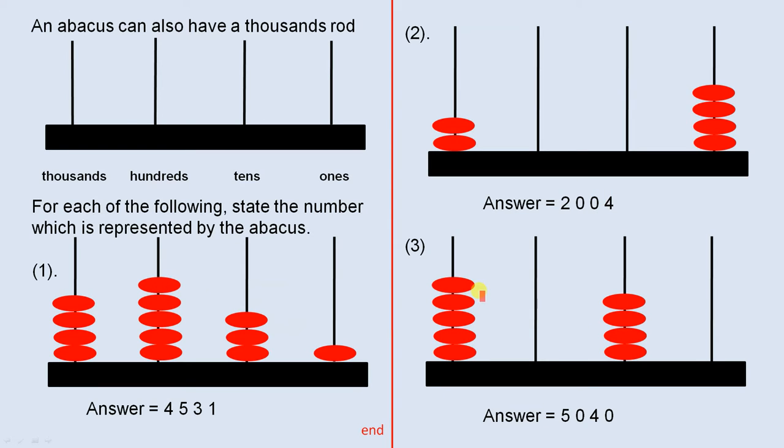And finally, five beads in the thousands column, no beads in the hundreds, four in the tens, and no beads in the ones. So it's 5040.